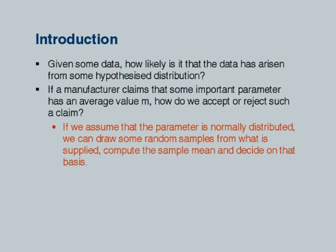If we assume the parameter is normally distributed we can draw random samples. It is very unlikely that all values will equal whatever the manufacturer claims — some will be more, some will be less. If all of them are less than what he claims, we are unlikely to believe his claim. With what confidence do we accept the manufacturer's claim that the mean is indeed so and so? In most practical situations there will be some physical meaning to the claim. If the manufacturer claims the bulb life is 1000 hours, but it turns out the average is 1200 hours, we are happy — what we are really testing is whether the mean is 1000 hours or more.